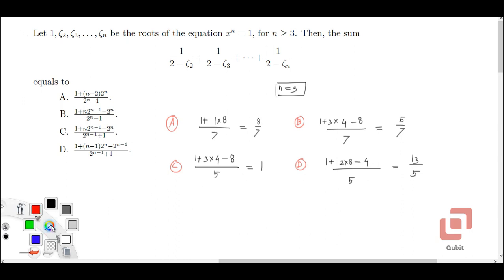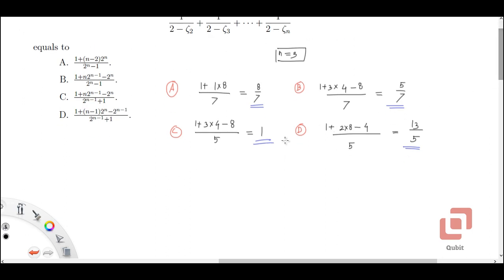So now you can see that none of these 4 options is actually equal to the other. So the case n equal to 3 will produce the right answer and the option. Let's start with the equation x^3 - 1 = 0 where n is 3.